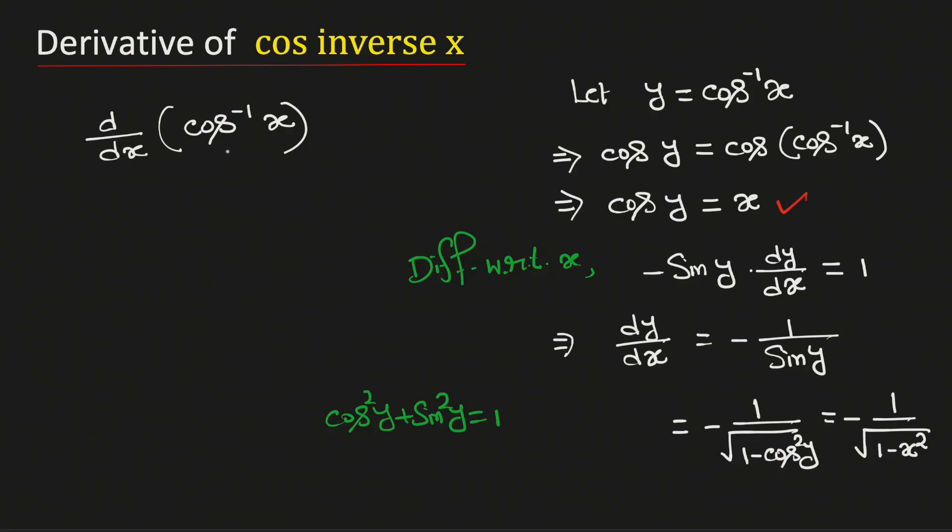Therefore the derivative of cos inverse x will be equal to negative 1 over square root of 1 minus x square. And this is our final answer.